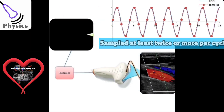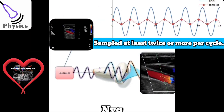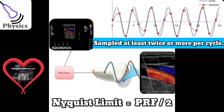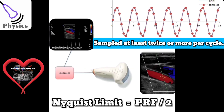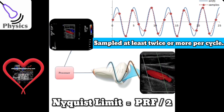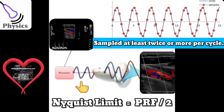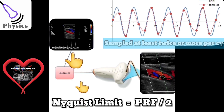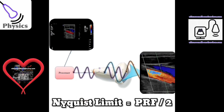Doppler velocity is accurately measured when each area is sampled twice. This is what the number 2 means in the Nyquist limit equation. In this diagram, the two purple waveforms represent two Doppler samples that display an accurate spectral velocity measurement on the screen.